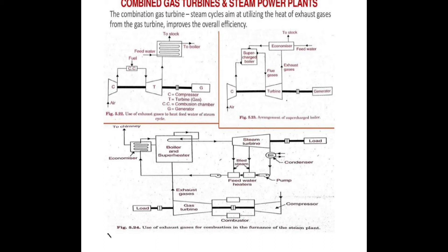This vapour is sent to the steam turbine. When the vapour drives the steam turbine, the steam turbine rotates. The steam turbine is coupled with a generator, so when the steam turbine rotates, the generator shaft also rotates. A turbine converts kinetic energy into mechanical energy, and this mechanical energy is converted into electrical energy by the generator. Thus, we get two power outputs.